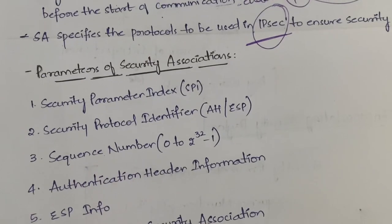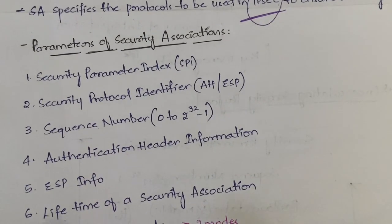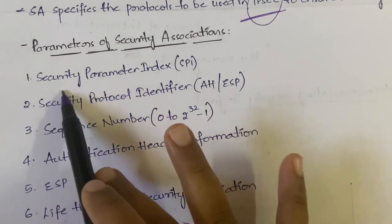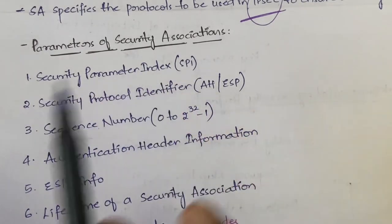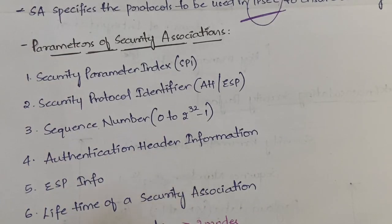Now, what are the parameters of security associations? We have seven parameters and I'll explain each of them in detail. First is the Security Parameter Index, or SPI. I've already explained about SPI in my previous video where I explained about the Authentication Header.